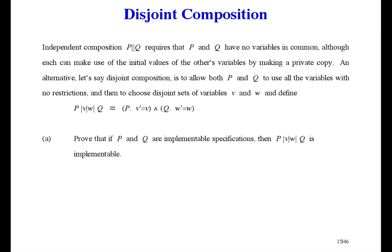After P is executed, we forget about everything P says about the final values of variables except for V. Since V and W are disjoint sets of variables, there's no conflict.